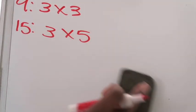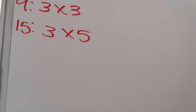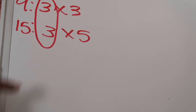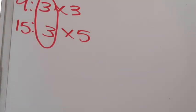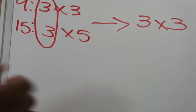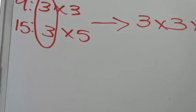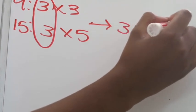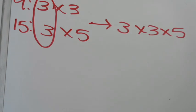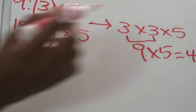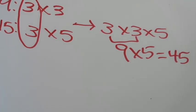The next step, once you've prime factored your denominators, is to look for common factors you can pair up from your two factor lists. Here's a pair of threes — that counts as one. Then we have a lonely three and a lonely five that aren't paired up, so they're left alone. This gives us 3 × 3 × 5. Multiplying that out: 3 × 3 = 9 and 9 × 5 = 45. So 45 is going to be my common denominator.